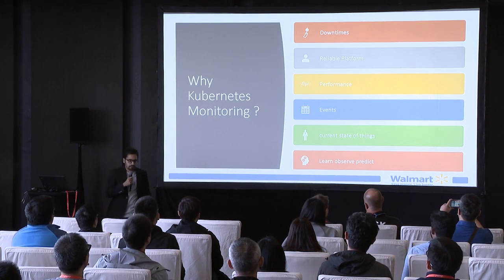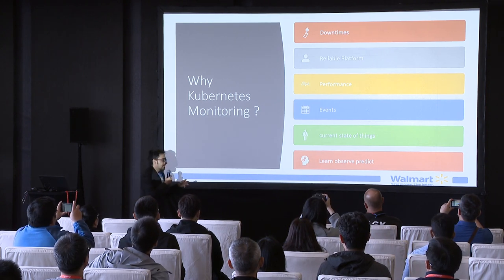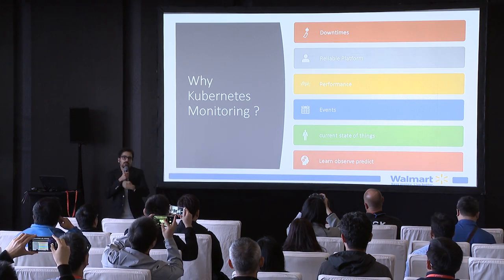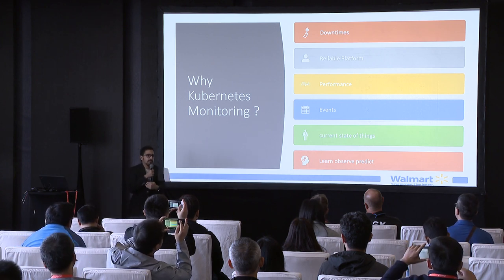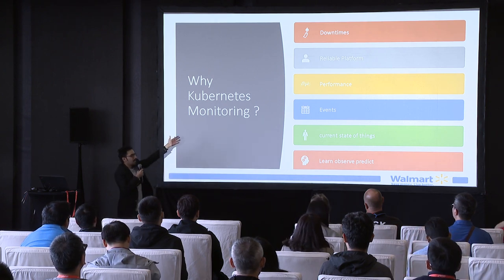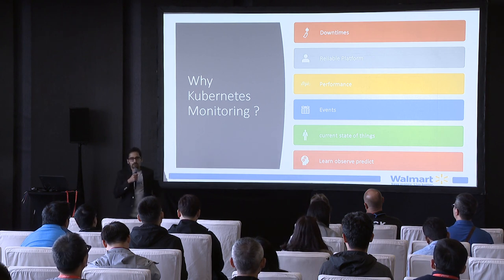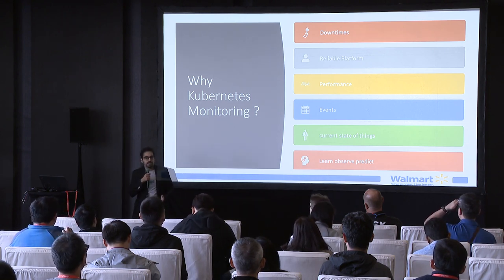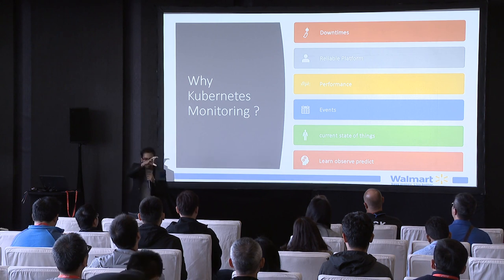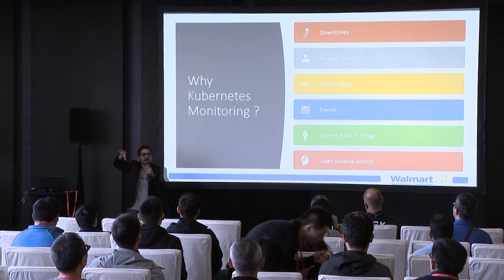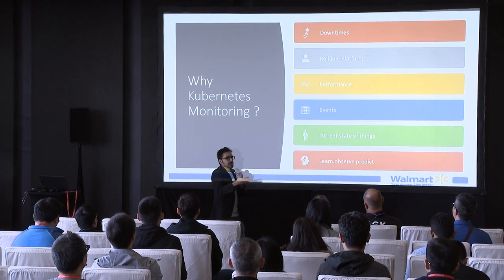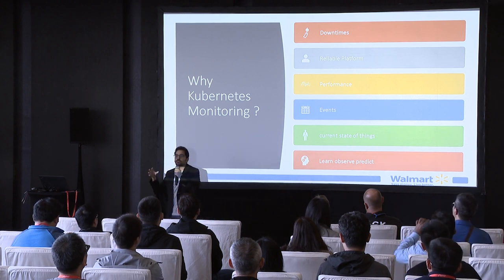Why Kubernetes monitoring? Kubernetes itself exposes some metrics to maintain the desired state, matching current state to desired state. But apart from that, it does not have any information about downtimes. If your pod goes down and you don't have any monitoring mechanism, you won't know what happened when. For a reliable platform, once you have historic data, you would know how reliable your platform is — how many pods went down in the last one week. You won't know without monitoring.